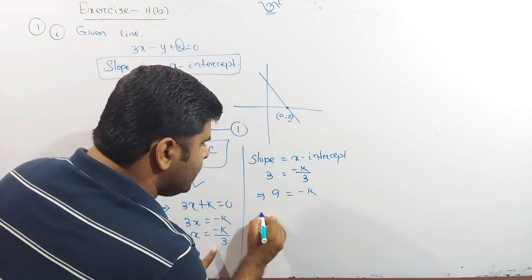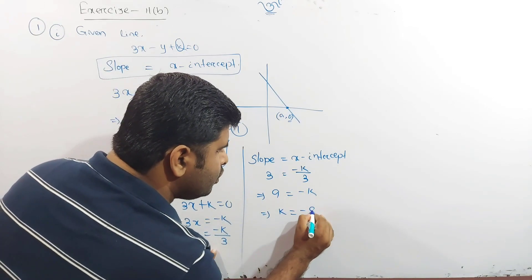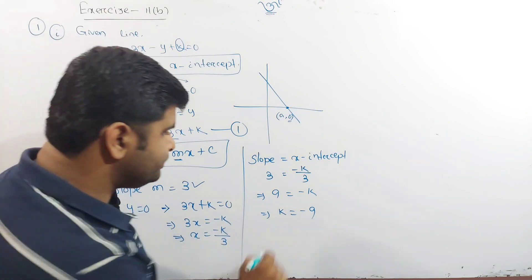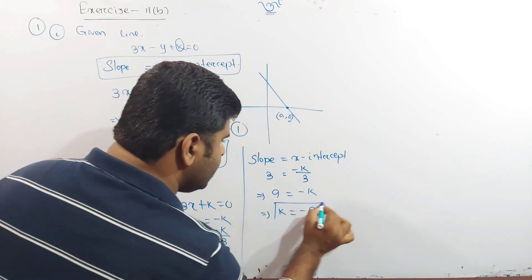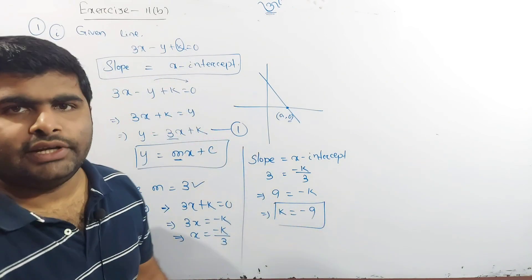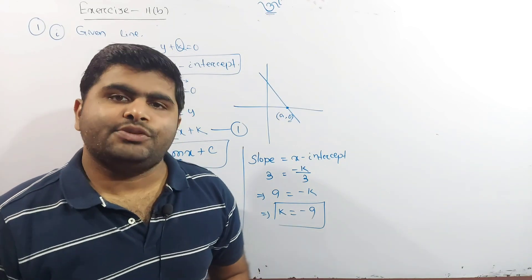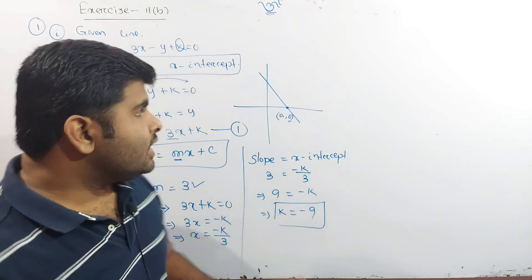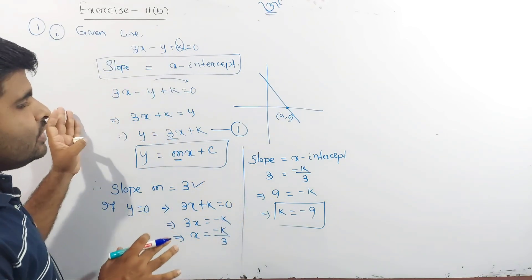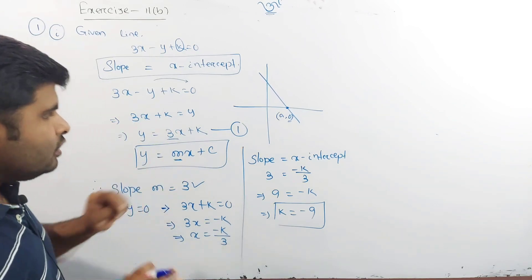Since slope equals x-intercept, we have 3 equal to minus k by 3, which implies k equal to minus 9. The answer is minus 9. This is question number 1, bit number 1 complete.